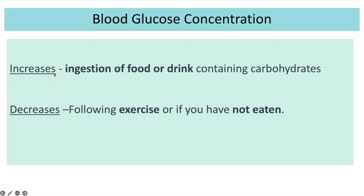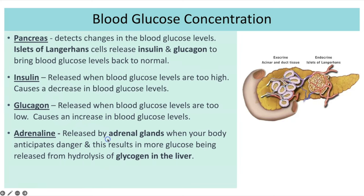Blood glucose concentration increases following ingestion of food or drink containing carbohydrates — it's important to emphasize 'containing carbohydrates', not just after eating or drinking. It decreases if you haven't eaten carbohydrates for a while, or following exercise, because exercise requires lots of ATP produced from respiration using glucose as a respiratory substrate. The key structures and hormones are the pancreas — containing the islets of Langerhans with receptors that detect changes and effectors that release insulin and glucagon.